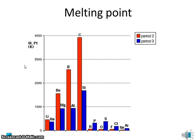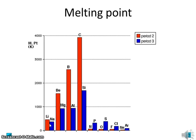We're required specifically to know something about the pattern in melting point of the elements as you go across a period. Here's some data for the melting points of the elements in period 2, running from lithium through to neon, and period 3 from sodium through to argon. There is a pattern that we can observe here which repeats itself.